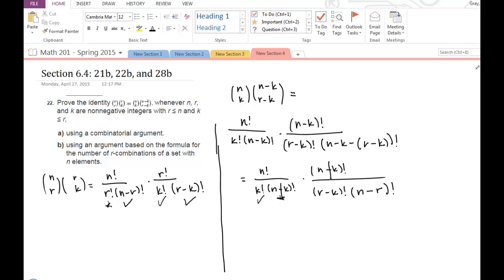Sometimes you want to leave that in there, sometimes you don't, but I'm just going to divide it out and see where that gets me. Then I have n factorial divided by k factorial times 1 over r minus k factorial times n minus r factorial.